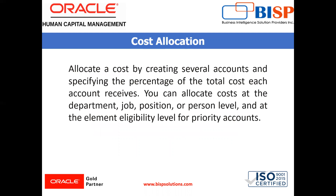What is cost allocation? Allocate a cost by creating several accounts and specifying the percentage of the total cost each account receives. You can allocate costs at the department, job, position, or person level, and at the element eligibility level. Accounting cost at lower levels of the costing hierarchy requires greater maintenance, but offers greater control over reporting and tracking costs.